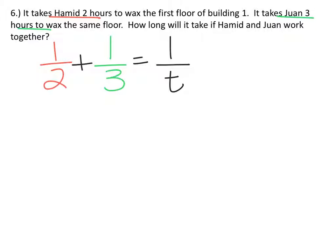To solve this equation, we want to multiply by the least common denominator. And that least common denominator is going to be six T.